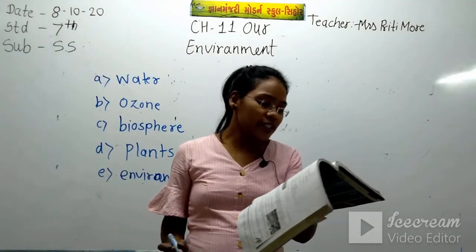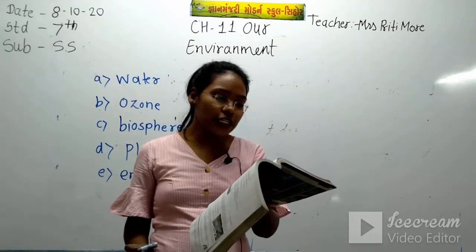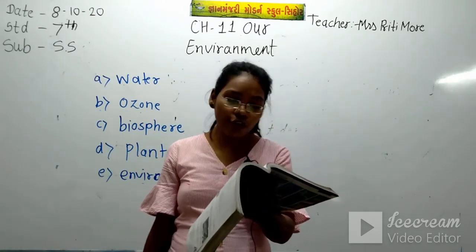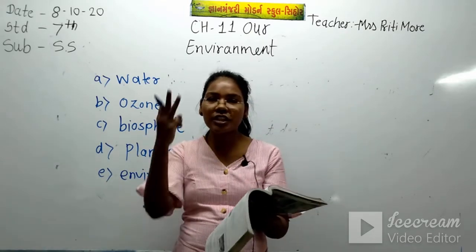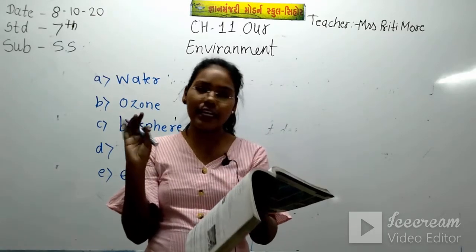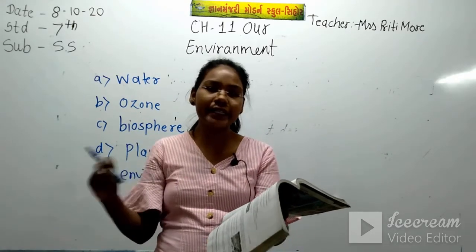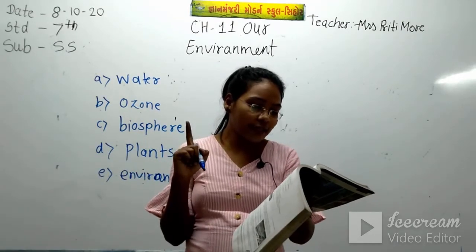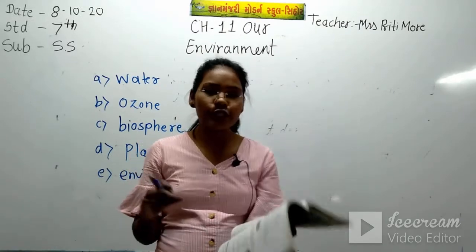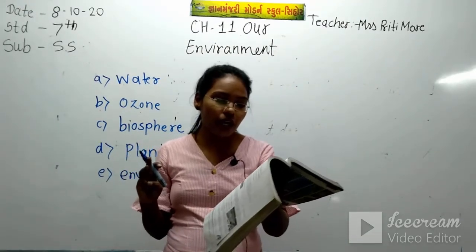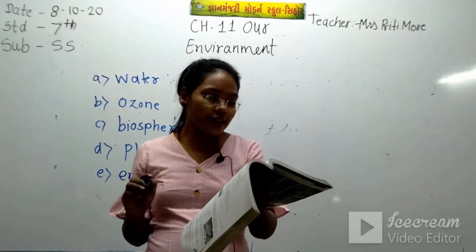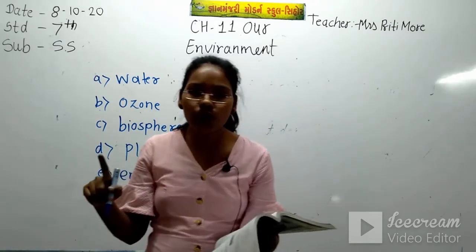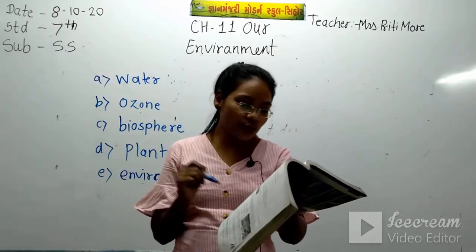Now choose the correct answer. Abiotic components of the environment include - options are plant, animal, both plant and animal, or air, water and land. The answer is option D: air, water and land. Biotic components do not include - plant, bacteria, water vapor, or animal. The correct answer is option three: water vapor. A natural ecosystem does not include - forest, lake, mountain, or school. The answer is school.